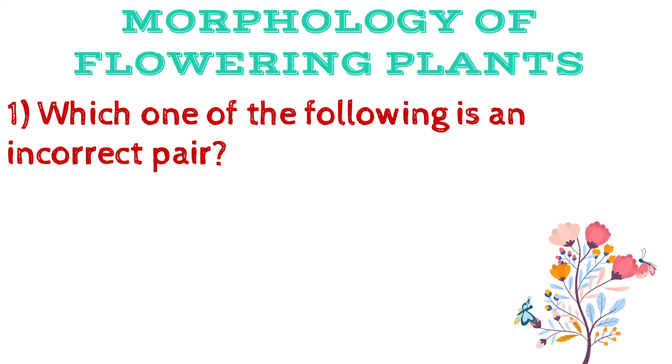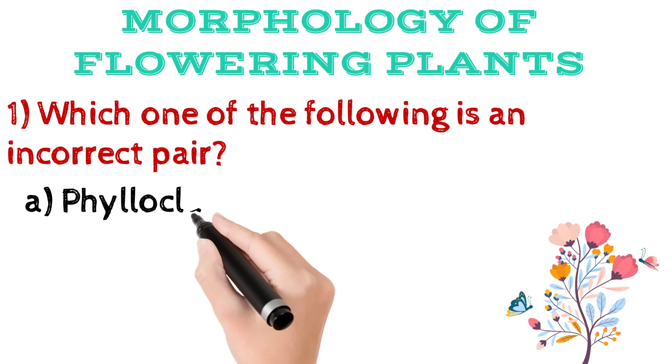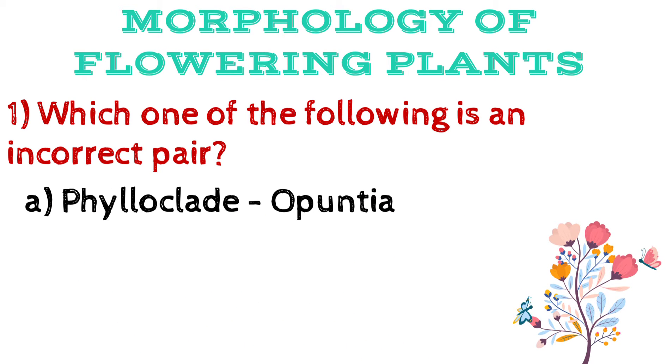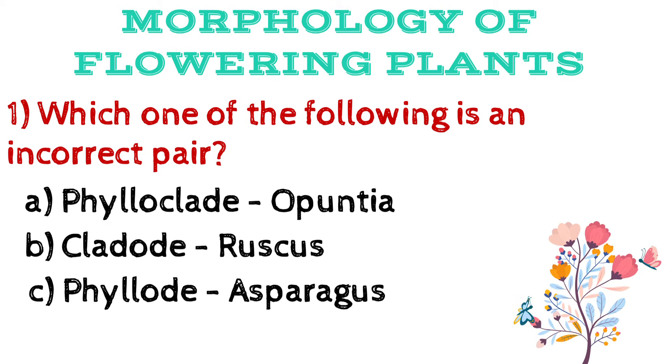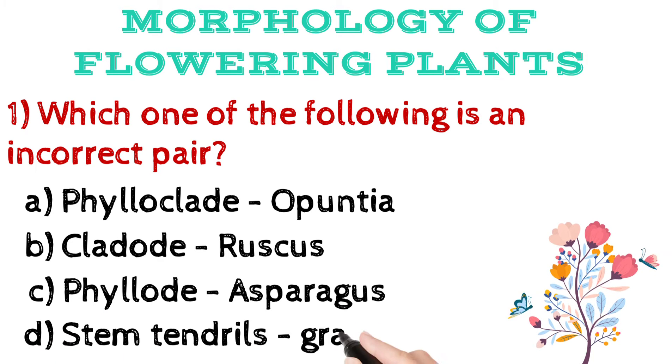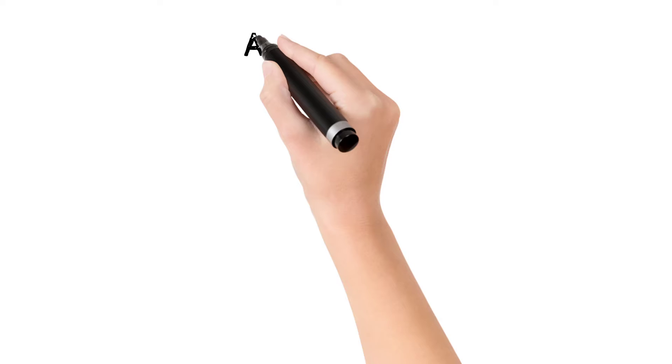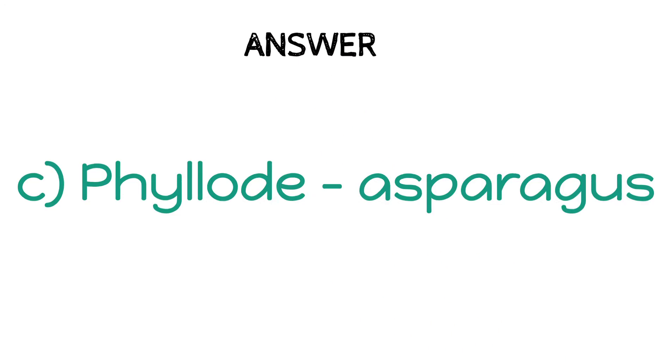Question number 1: Which one of the following is an incorrect pair? A. Phylloclade opuntia, B. Cladode ruscus, C. Phyllode asparagus, D. Stem tendrils grapevine. The answer is C, Phyllode asparagus.